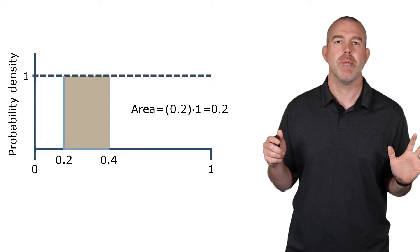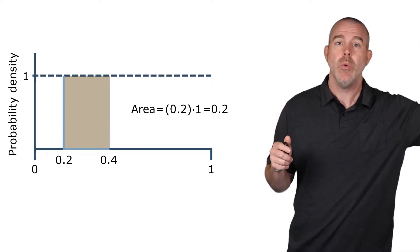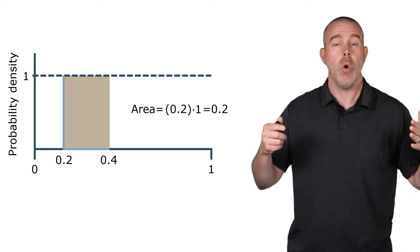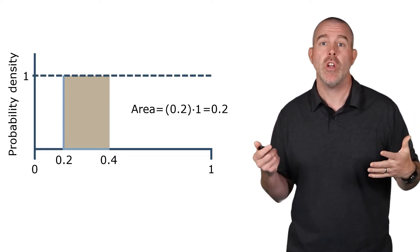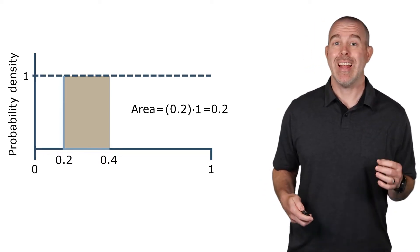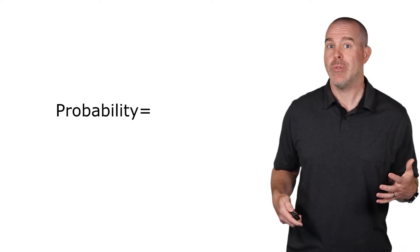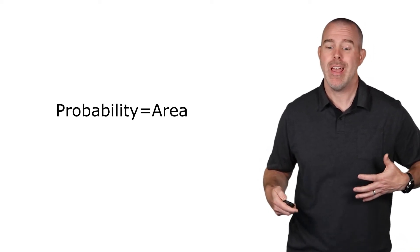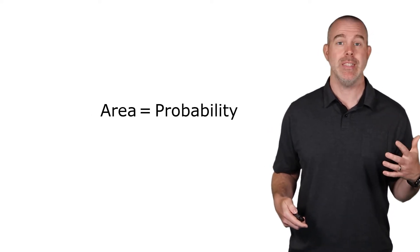Now, this is kind of an unusual probability density function. Most variables don't have this equally likely density for the whole interval. Most variables, it varies along there. Certain intervals are more likely than others. The key here is that the area was 2 tenths. So that means that the probability was 2 tenths. Probability is area, area is probability. This is the big takeaway from this little investigation.